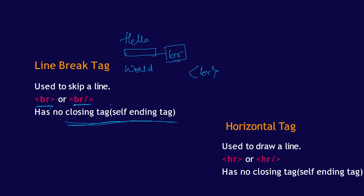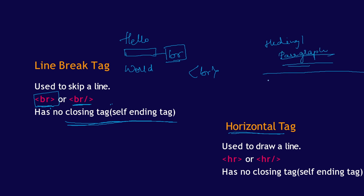You can write the BR tag with or without a forward slash. In certain browsers, just BR without a slash may not show output, but BR with a forward slash will give you the output. The next tag is the horizontal tag. This horizontal tag is used to add a horizontal line in your program. For example, if you want a line between two headings or two content sections, you use an HR tag. It is also a self-ending tag with no closing tag — you can write it as HR or HR with a forward slash.